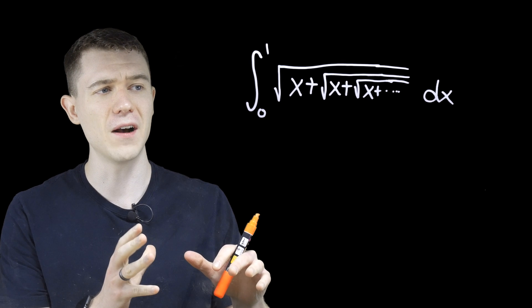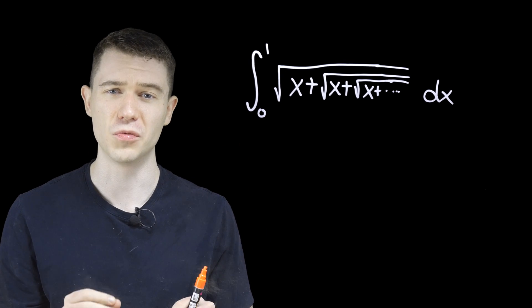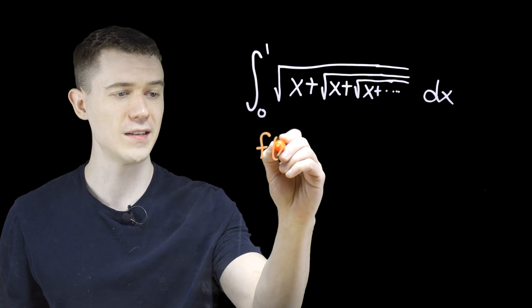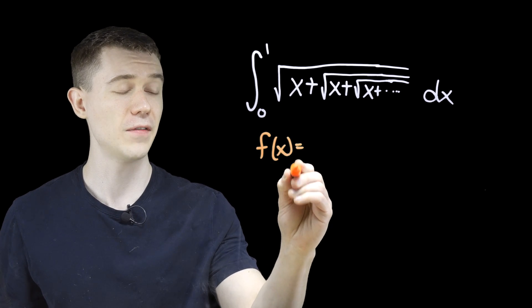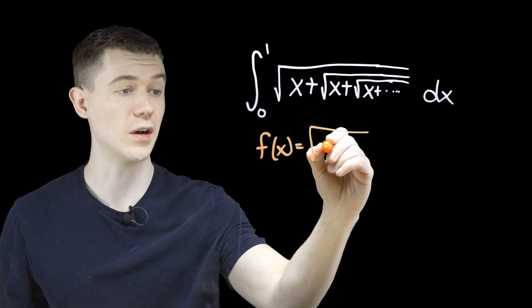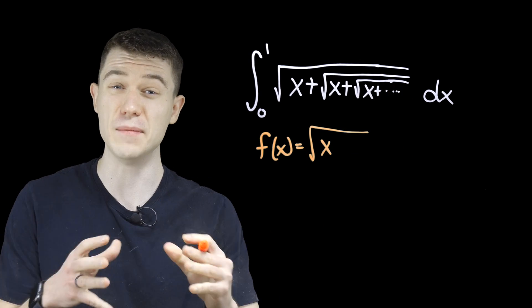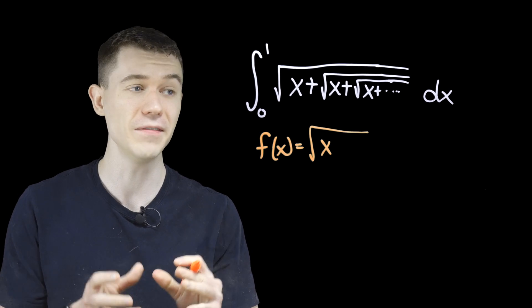So let's figure out a different way to write this function. I'm going to call this function f of x, and it looks like f of x is the square root of x plus the square root of x plus the square root of x keeps getting nested inside indefinitely.